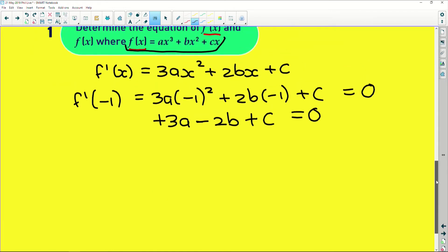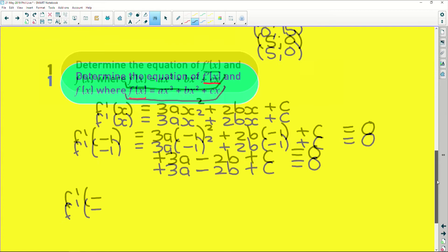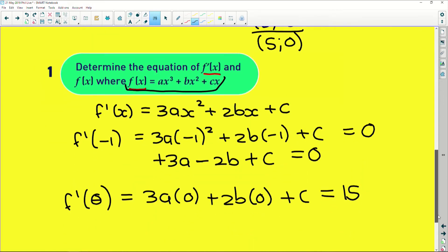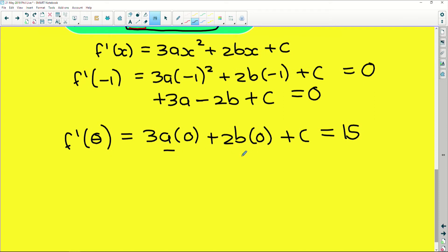Okay. The next point, if we say f prime of zero, is equal to 3a multiplied by zero plus 2b multiplied by zero plus c, and that equals the y value of fifteen, which is given to us by that intercept there. So that's easy. These both give us zero, which means that c is equal to fifteen. So that is our first variable found, which means that this equation here becomes 3a - 2b + 15 equals zero.